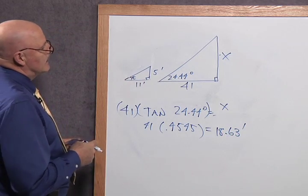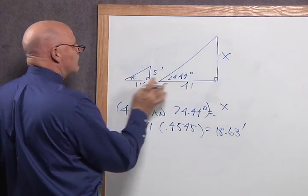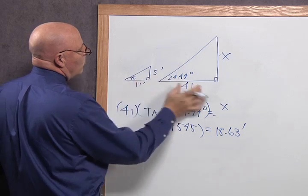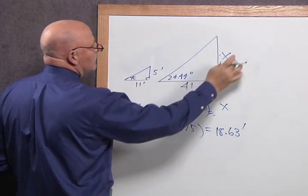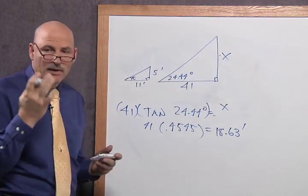Which kind of makes sense, because this is like 3.5 times this, because 4 times that would be 44, and 4 times this would be 20, but it's a little bit less than 4 times, so 18.63, that works.